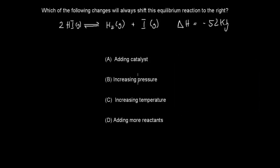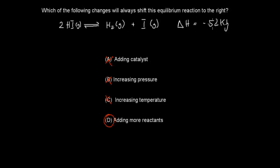Welcome back. The correct answer is D. Adding a catalyst won't change the equilibrium position. Increasing pressure shifts to the space-saving side, meaning fewer moles of gas — which shifts left, not right. Increasing temperature in this case causes the system to absorb the added energy by shifting left (since the forward reaction is endothermic). Only adding more reactants increases the concentration on the left, causing the equilibrium to shift right to compensate. So D is the only correct answer.